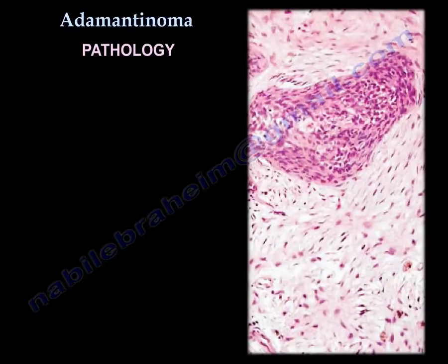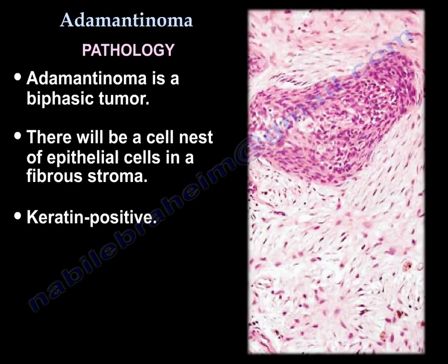Regarding the pathology, the tumor is biphasic — you find nests of epithelial cells in a fibrous stroma, and keratin staining is positive.